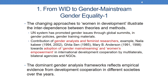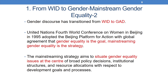The dominant gender analysis frameworks reflect empirical evidence from development cooperation across different societies. The gender discourse transitioned from WID to GAD. The United Nations 4th World Conference on Women in Beijing in 1995 adopted the Beijing Platform for Action, with global agreement that gender equality is the goal and mainstreaming gender equality is the strategy. With respect to mainstreaming, various concepts emerged such as gender budgeting. The mainstreaming strategy aimed to situate gender equality issues at the center of broad policy decisions, institutional structures, and resource allocations.